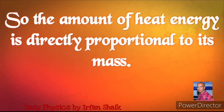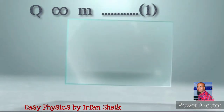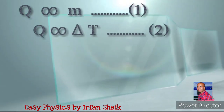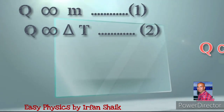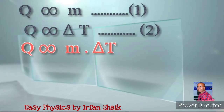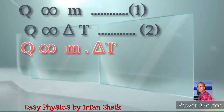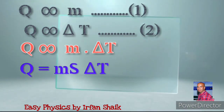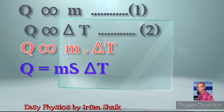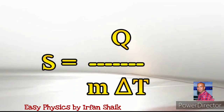So the amount of heat energy is directly proportional to the mass. We can write this as Q is proportional to m. The difference in temperature is also proportional to Q, i.e., Q is proportional to delta T. By joining these two equations we can write Q is proportional to m multiplied by delta T. We can write this as Q is equal to ms delta T.